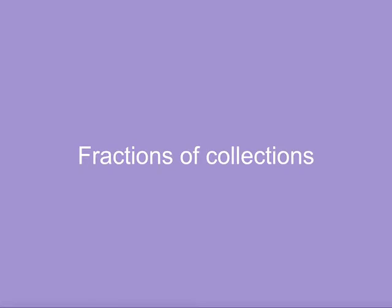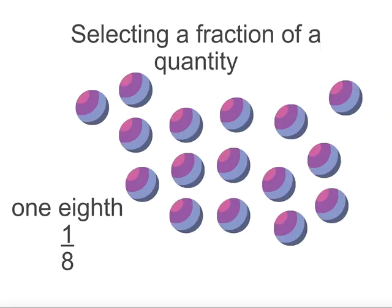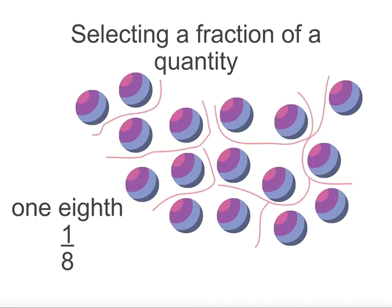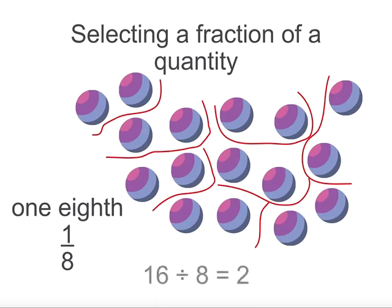Say for example I have 16 beach balls and I want to know how many 1/8 is. To work this out I would divide my collection into 8 equal groups. So 16 divided by 8 equals 2. 1/8 of 16 is 2.